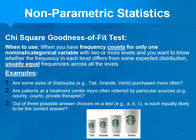Another example: out of three possible answer choices on a test — A, B, and C — you can test whether each is equally likely to be the correct answer.